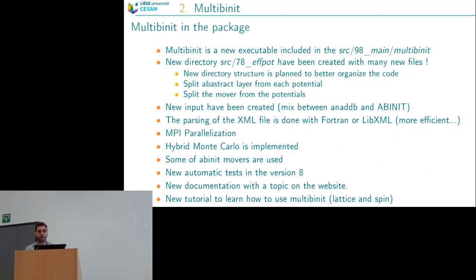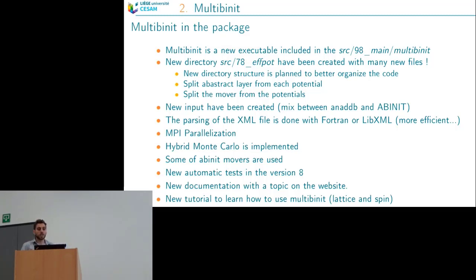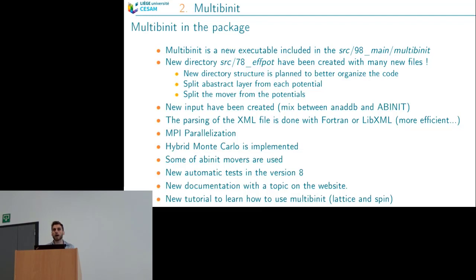Multi-minit is a big package with its own executable in the main abinit directory. There is a directory for all potential sources — the 78_fpot directory — which we plan to split into smaller subdirectories: one for the abstract layer, one for the spin potential, one for the lattice, and one for the movers. A new input file is created, mixing the abinit and anadDB input file formats. Multi-minit can read XML files with a Fortran parser or the libxml library, which is highly efficient.